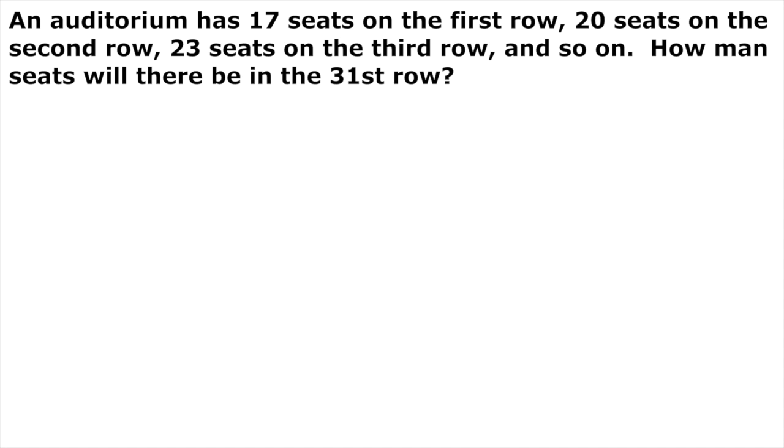We're going to start off with this one. This is a traditional auditorium. With normal auditoriums, the further back you go, the more rows that you have. It's further away from the action, if you will, so they can fit more rows in. This particular one has 17 seats on the first row, 20 on the second, and 23 on the third. We're trying to determine how many seats there will be on the 31st row.